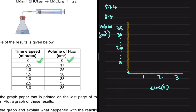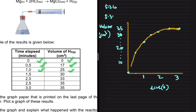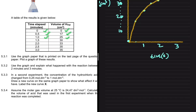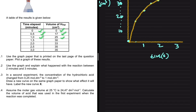Our first coordinate is (0, 0), then (0.5, 17), then (1, 25), then (1.5, 30), then (2, 33), then (2.5, 35), and finally (3, 35). Plotting these points gives us our graph for the first experiment.